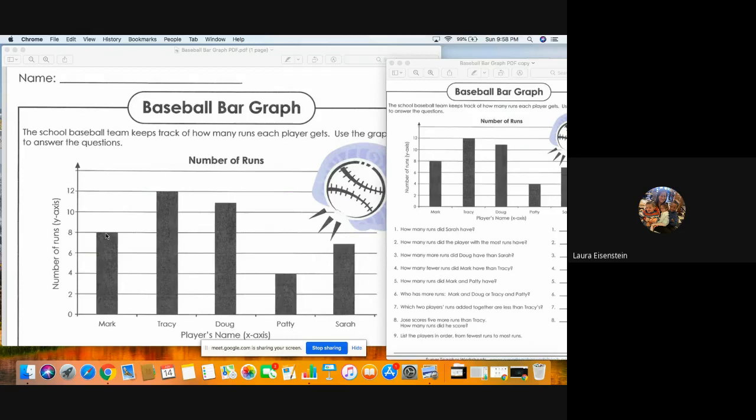Mark, eight runs. Tracy, 12 runs. Doug, he's in between over here, so that would be 11 runs. Patty has four runs. And Sarah, like we said, has seven runs. Okay.